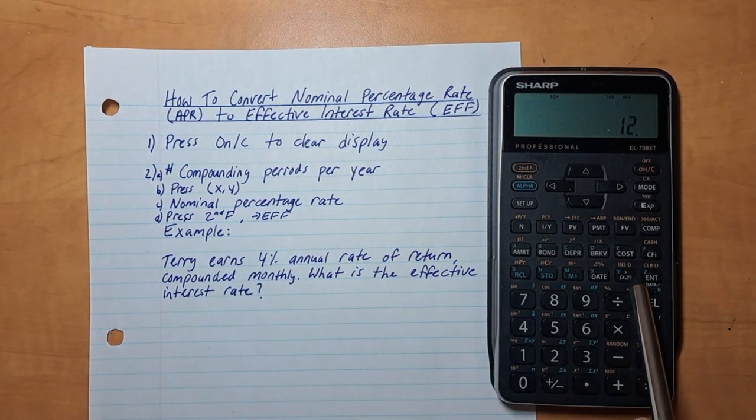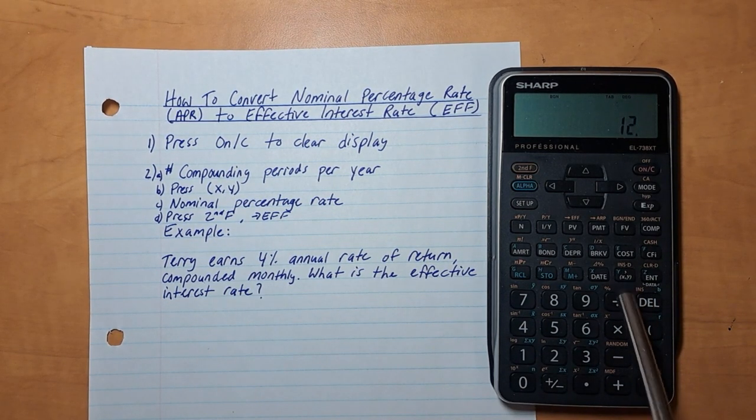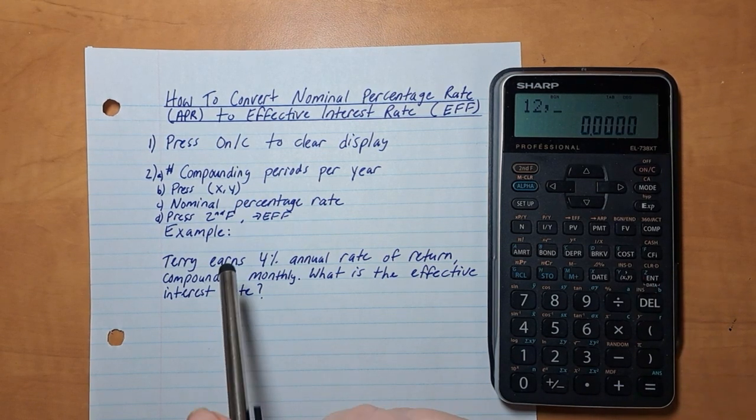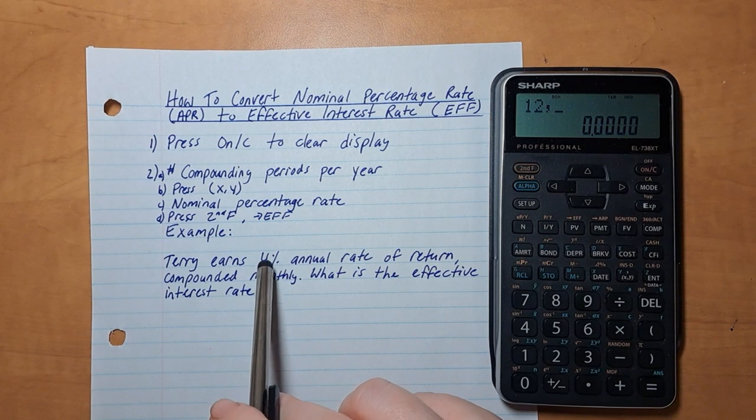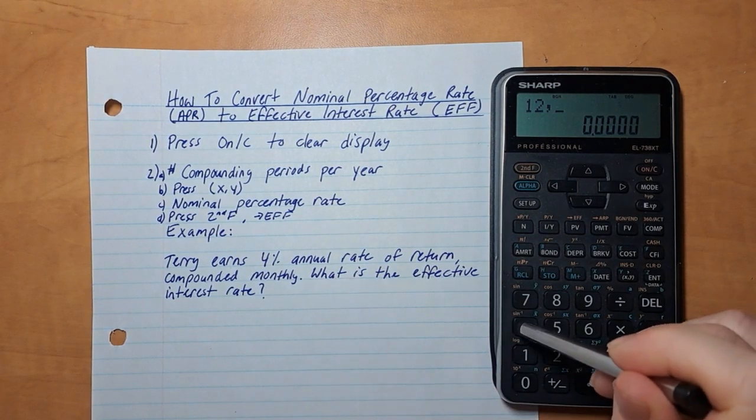Then you press this button here, the XY button. And then you type in the nominal percentage rate, which is 4%, because it's 4% annual return, so that is 4.